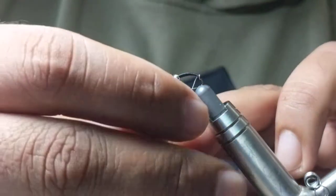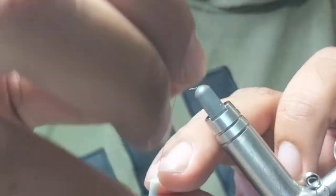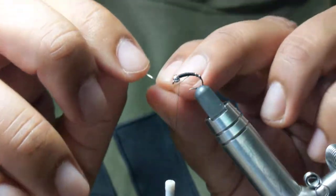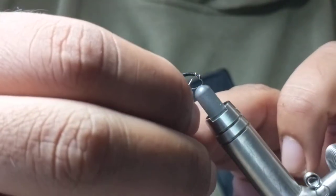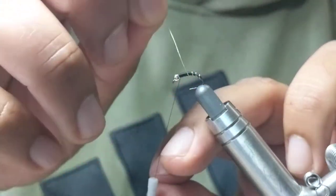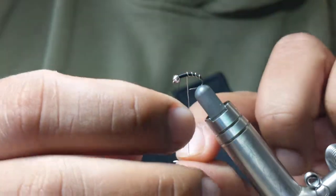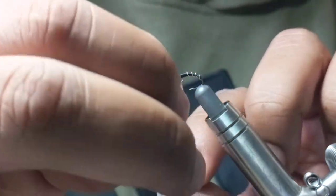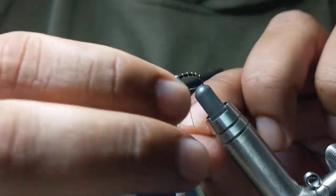I like to space my wraps relevant to the size of fly that you're tying. This hook size is a little bigger than I would traditionally use for the zebra midge, so my spiral wraps are a little bit wider or thicker than usual.